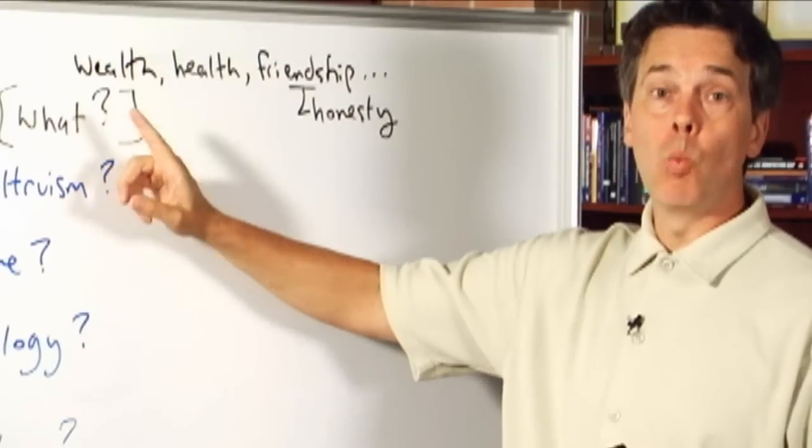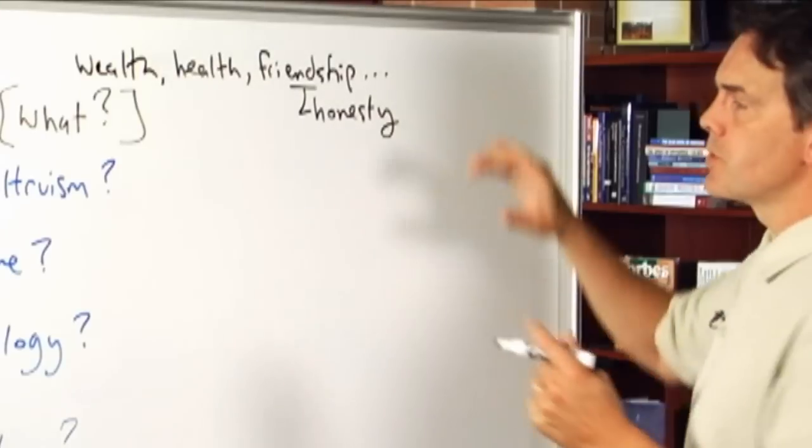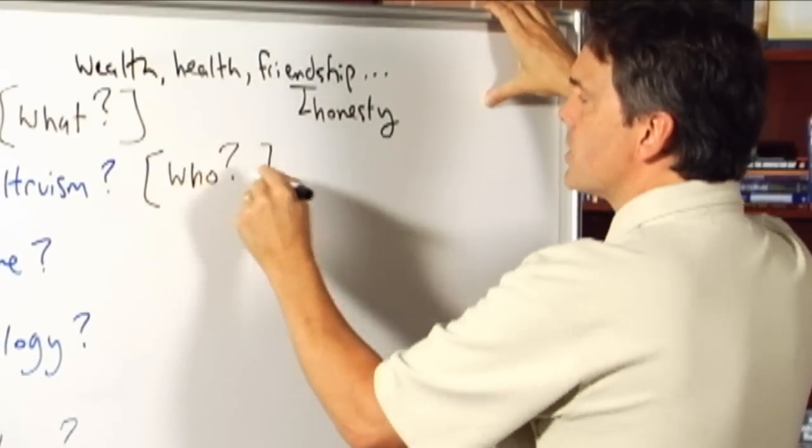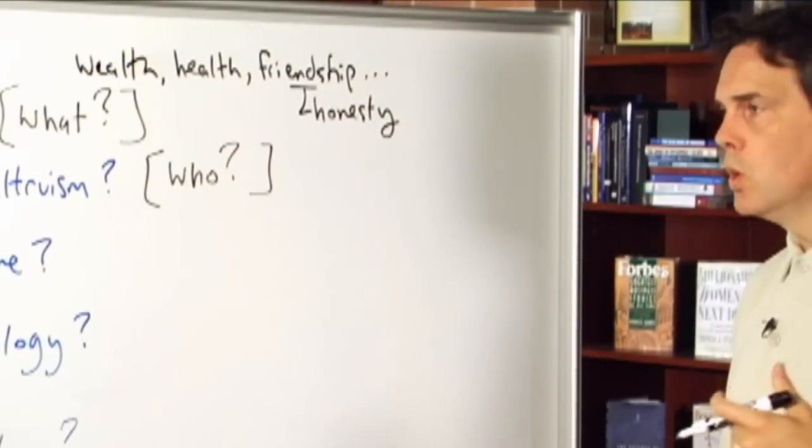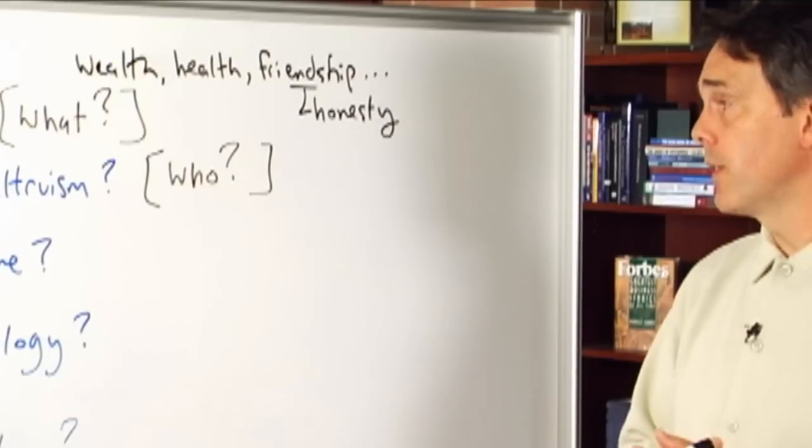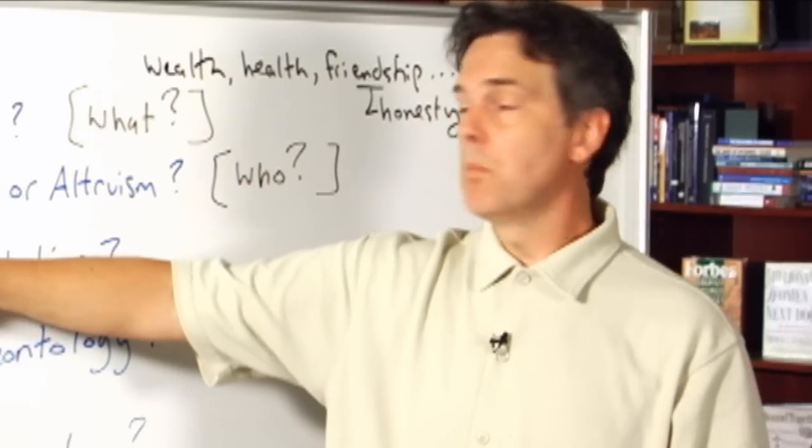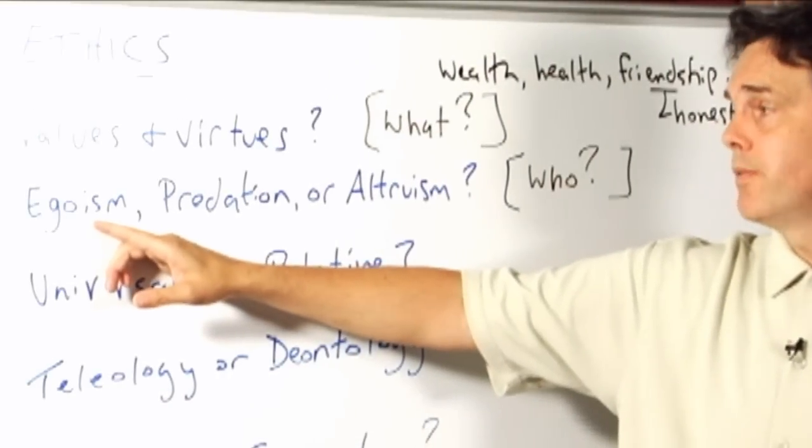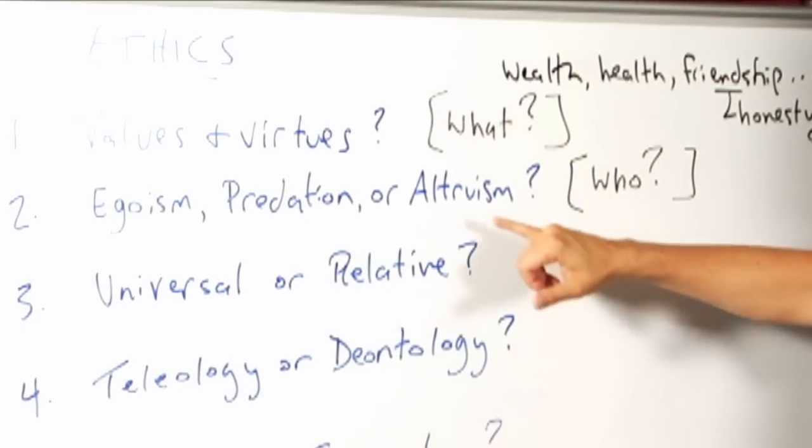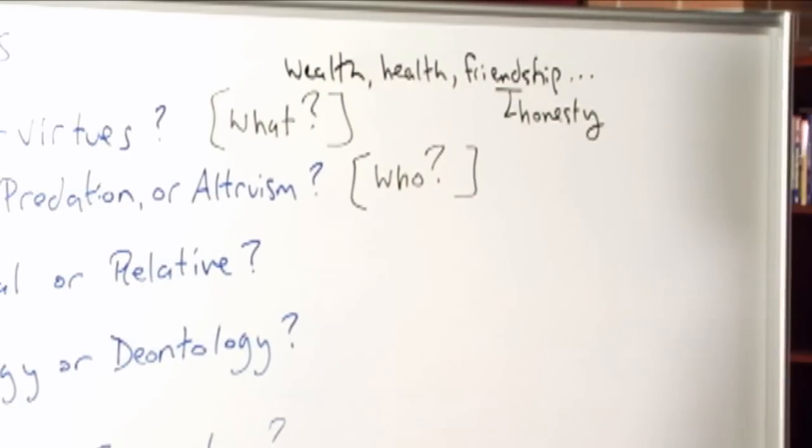Question number two, the question of egoism, predation, or altruism. Here we're asking for an answer to a different interrogative. This is a question of who. Who should be the beneficiary of the values that are in question here? Should it be that I achieve my own values? I should be the ultimate beneficiary in my life? Should I be the beneficiary at your expense, or should you be the beneficiary perhaps at my expense? But who is the question here?